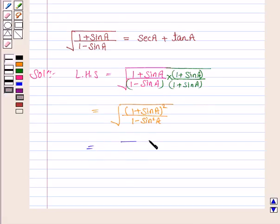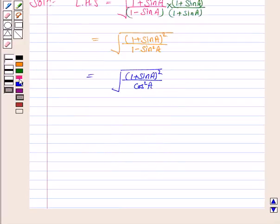Now this is equal to the square root of 1 plus sine A whole square upon cos square A. 1 minus sine square A is cos square A.